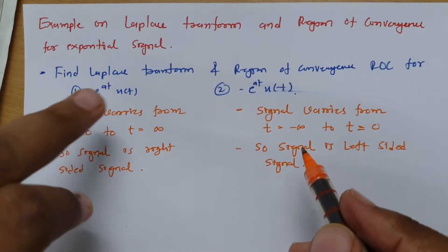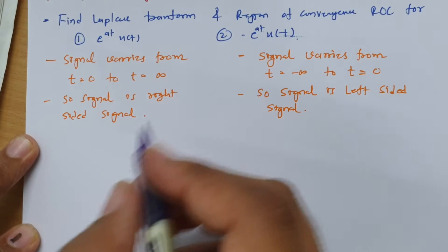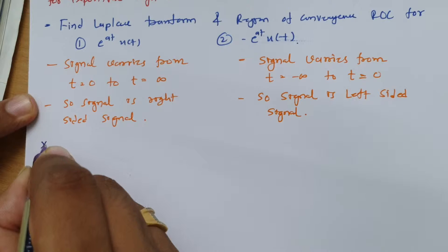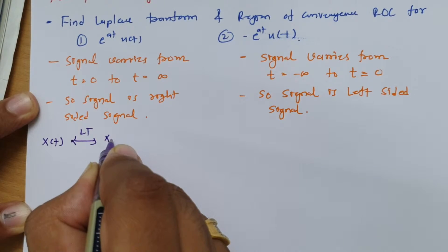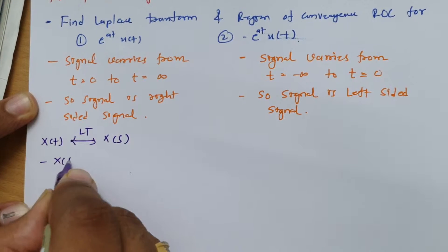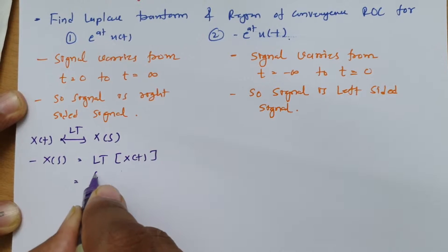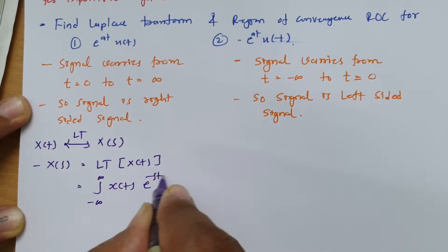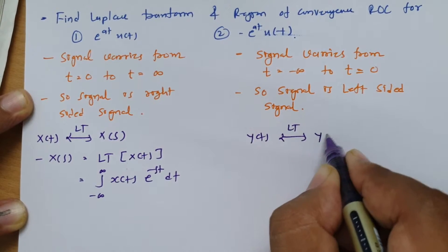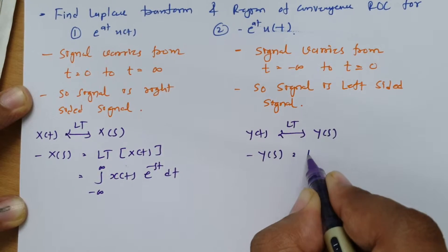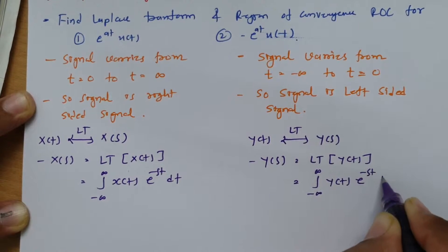So it is now clear that the first is a right-sided signal and the second is a left-sided signal. Let us calculate the Laplace transform of both. If this first signal is x(t), then the Laplace transform X(s) equals the integral from minus infinity to infinity of x(t) times e to the power minus st dt. For the second signal y(t), the Laplace transform Y(s) equals the integral from minus infinity to infinity of y(t) times e to the power minus st dt.